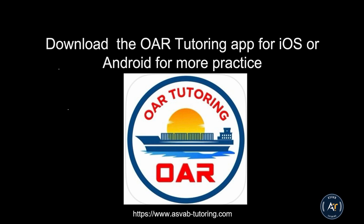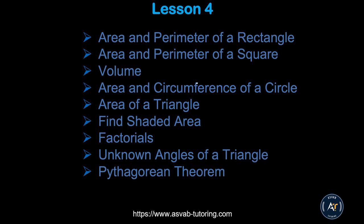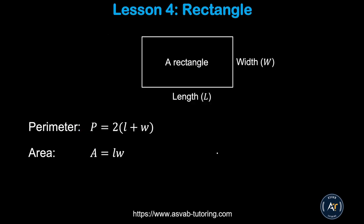In Lesson 4 there are plenty of problems that will help you study that section. The app also has a prediction test to see if you are ready to take the actual Wire test. In this lesson we'll learn how to find area and perimeter of a rectangle, area and perimeter of a square, volume, area and circumference of a circle, area of a triangle, shaded area, factorials, unknown angle of a triangle, and the Pythagorean theorem.